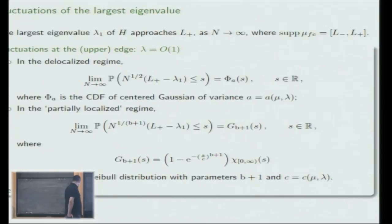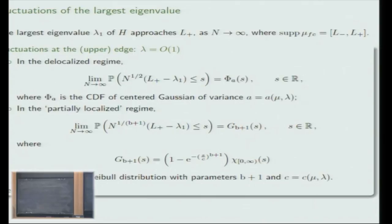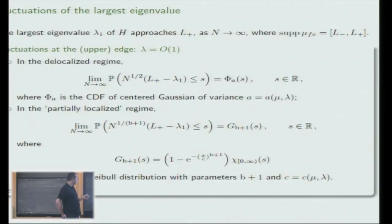To say something about the fluctuations of the largest eigenvalue: lambda_1 is the largest eigenvalue of my deformed matrix, and it approaches L_plus, the upper edge, as N tends to infinity. In the delocalized regime, the fluctuations of the top eigenvalue are Gaussian—I rescale the distance from the edge by root N, and this converges to a Gaussian whose variance can be computed explicitly from a slightly complicated formula. However, in the localized regime, we must rescale differently, and the fluctuations are no longer Gaussian but are described by a different distribution.